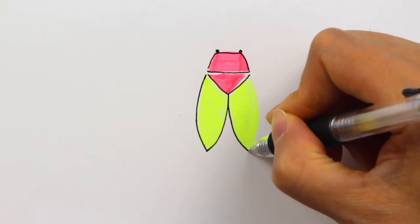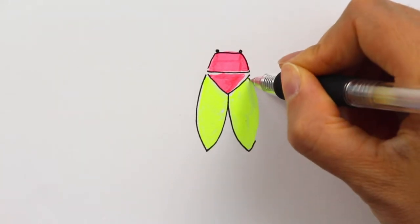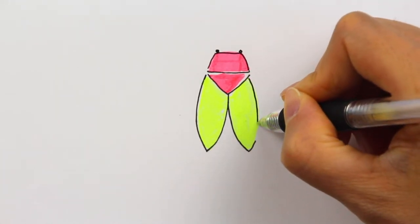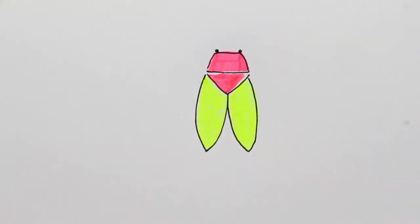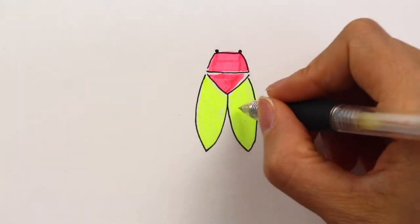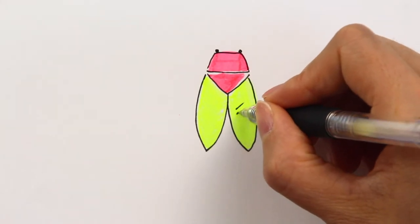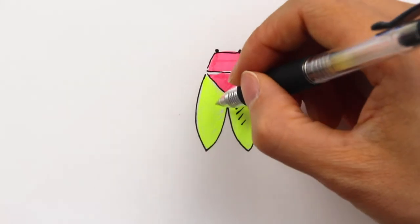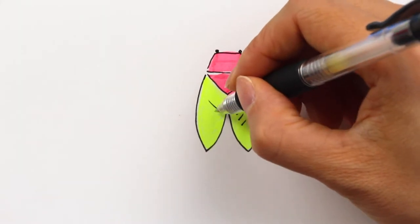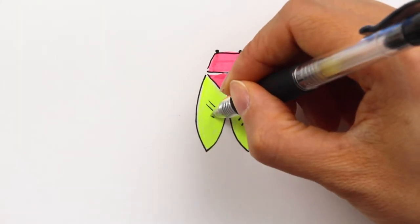Do the other part and connect them. Because cicada's wing is transparent, in order to show that you will have to use some lines like this to indicate that this is a transparent wing. The same thing in the future when we learn how to draw windows, you do lines like this to indicate that it's transparent.